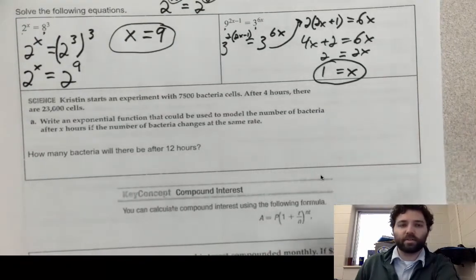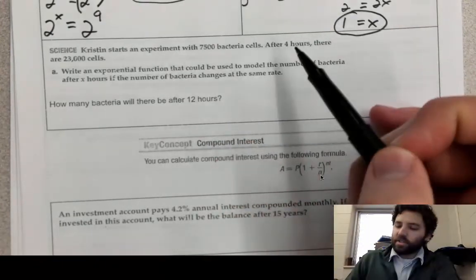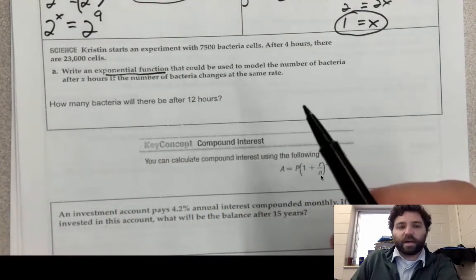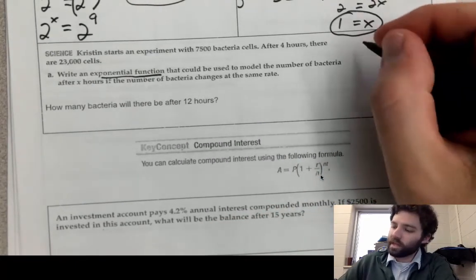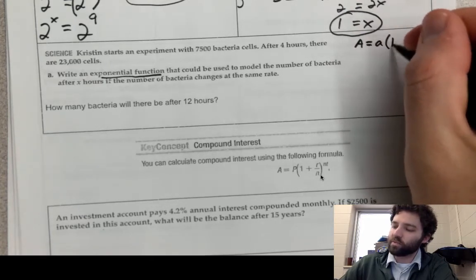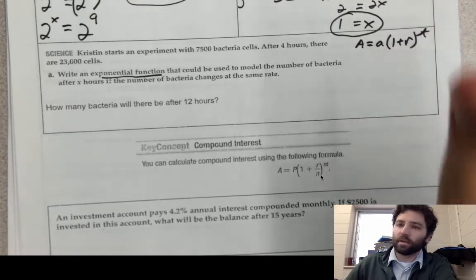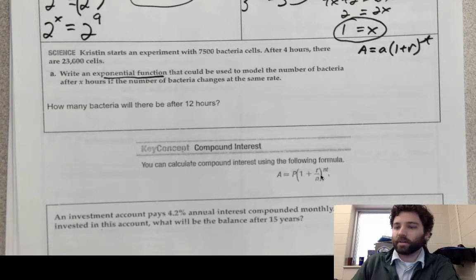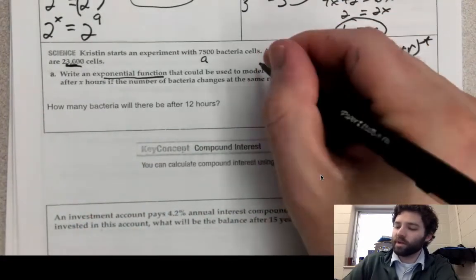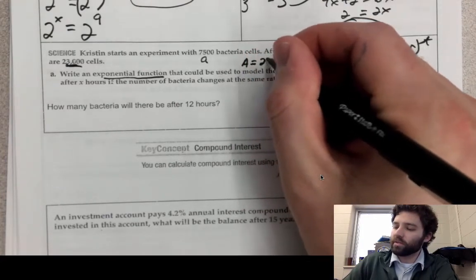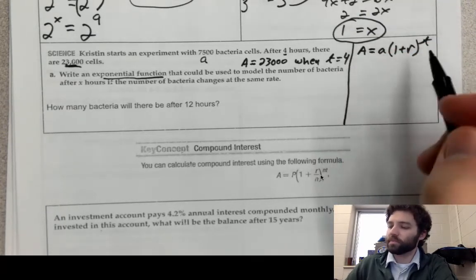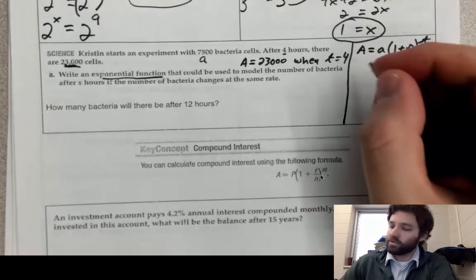Here's a word problem: Kristen starts an experiment with 7500 bacteria cells, and after four hours there are 23,000 cells. We want an exponential function to model the number of bacteria after x hours, assuming the same rate of change. The formula for exponential growth is A equals a times (1 plus r) to the t. We know the initial amount a is 7500, and A equals 23,000 when t equals 4. We'll use that to solve for r, the growth rate.